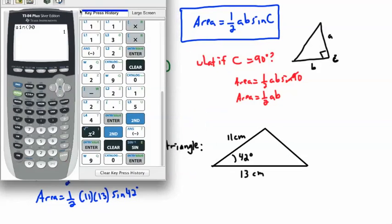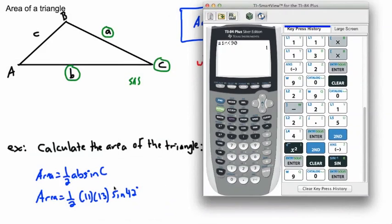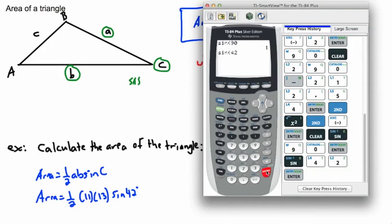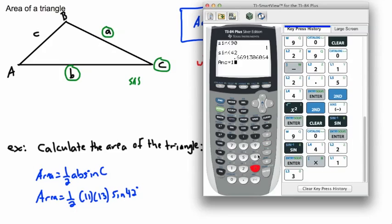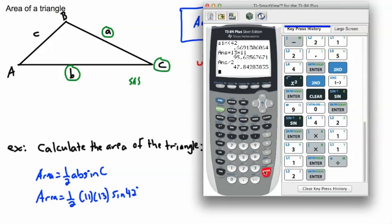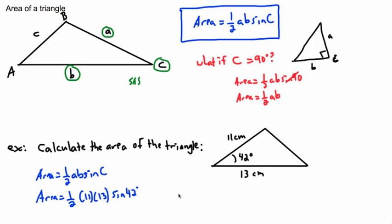So that's one half, 11 times 13 times the sine of angle 42. And I'll just do that on my calculator. So I'll say sine of 42, enter. Multiply that by 13. Multiply that by 11. I'm going to take that answer and divide it by 2 because that's what the one half does. And I get 47.8. So that's my answer. My area is approximately 47.8.